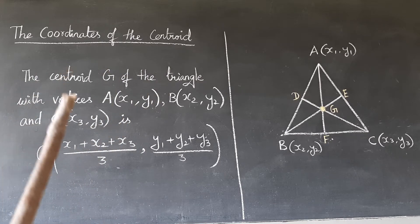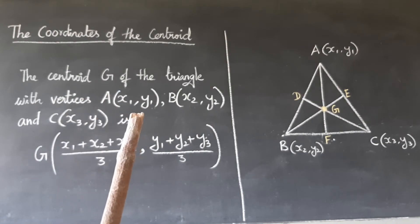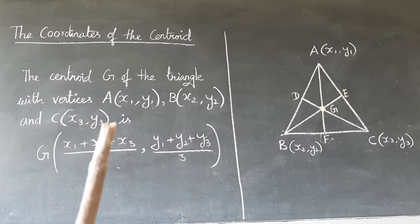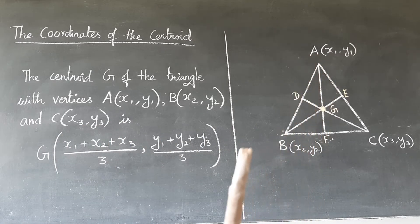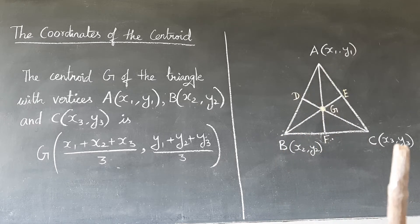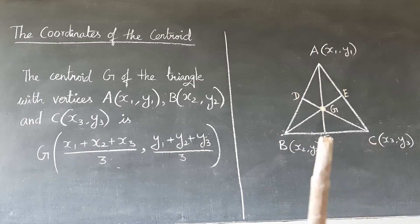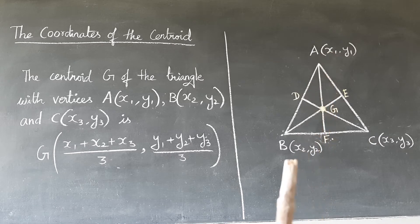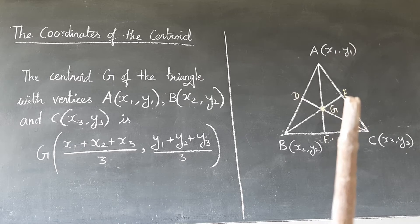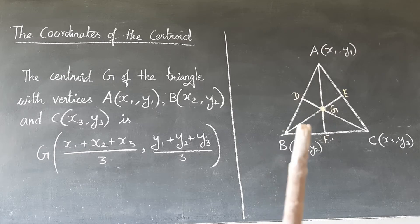The centroid G of the triangle with vertices A(x₁,y₁), B(x₂,y₂), C(x₃,y₃). See here A, B, C: x₁,y₁, x₂,y₂, x₃,y₃. So F is the midpoint of BC, E is the midpoint of AC, and D is the midpoint of AB.